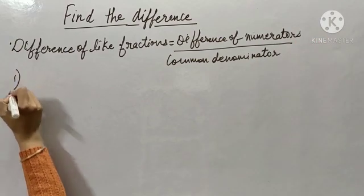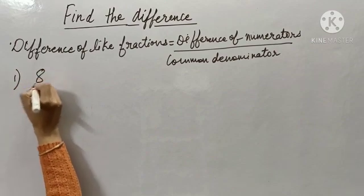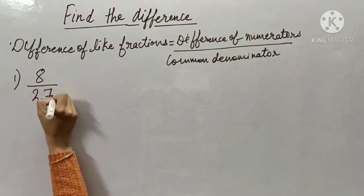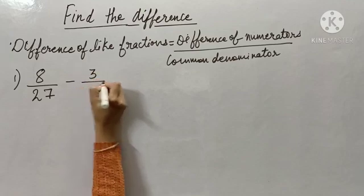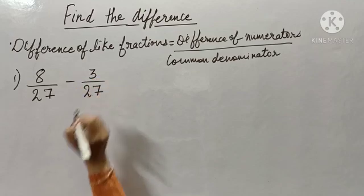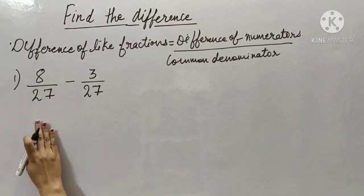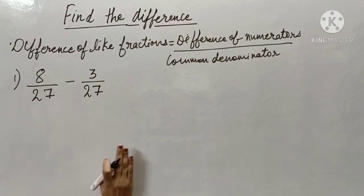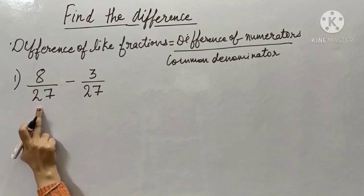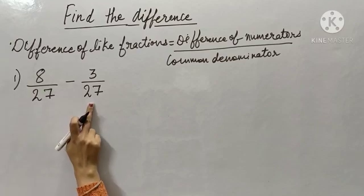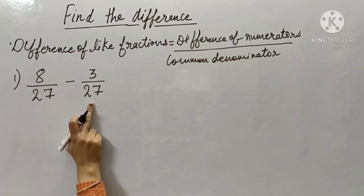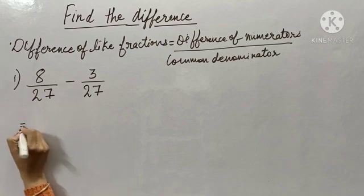My first question is 8 upon 27 minus 3 upon 27. Now you can see both the fractions are my like fractions. Here also my denominator is 27 and in this fraction also my denominator is 27. So what I will be doing to find the difference?